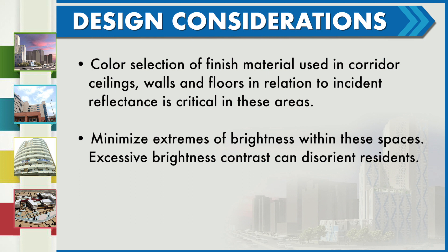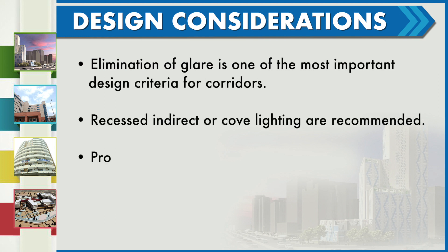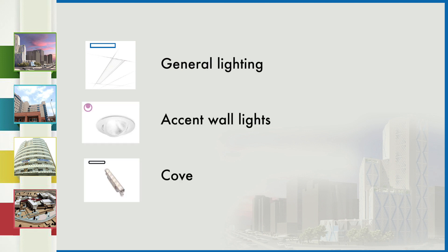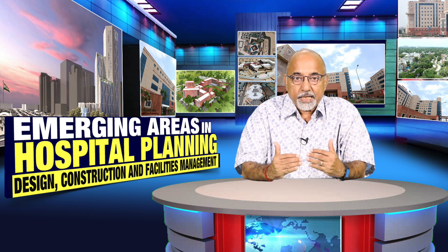Minimize extremes of brightness within these spaces. Excessive brightness and contrast can disorient residents. Elimination of glare is one of the most important design criteria for corridors. Recessed indirect or cove lighting are recommended. Properly shielded down lights can also work effectively in these areas. General lighting, accent lighting and cove lighting are shown in the slide on screen.